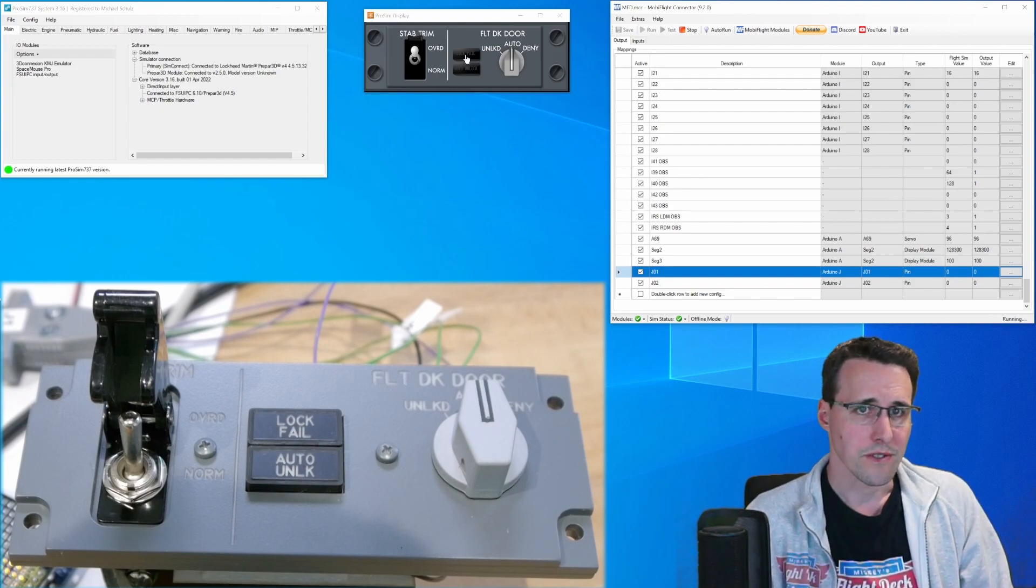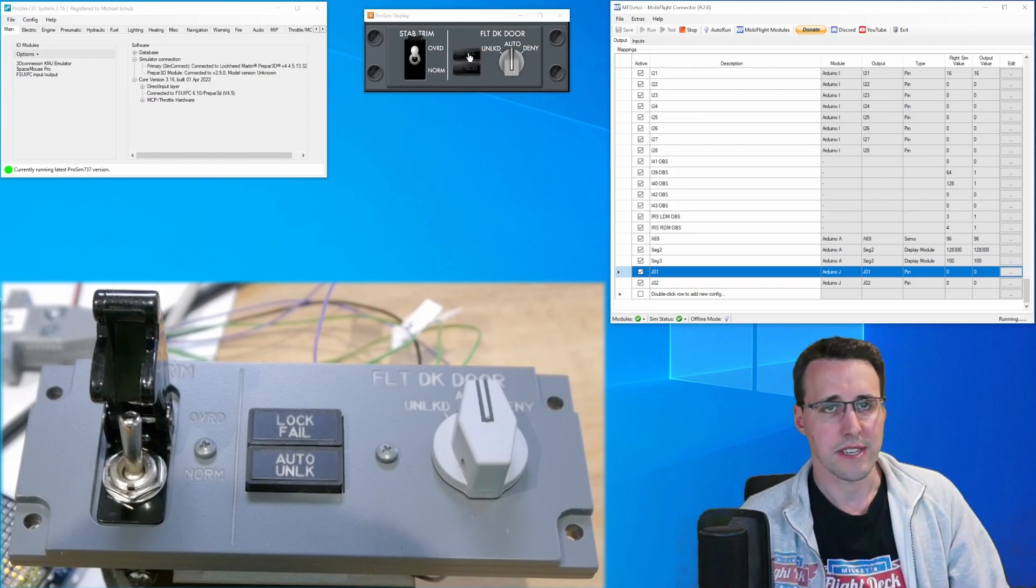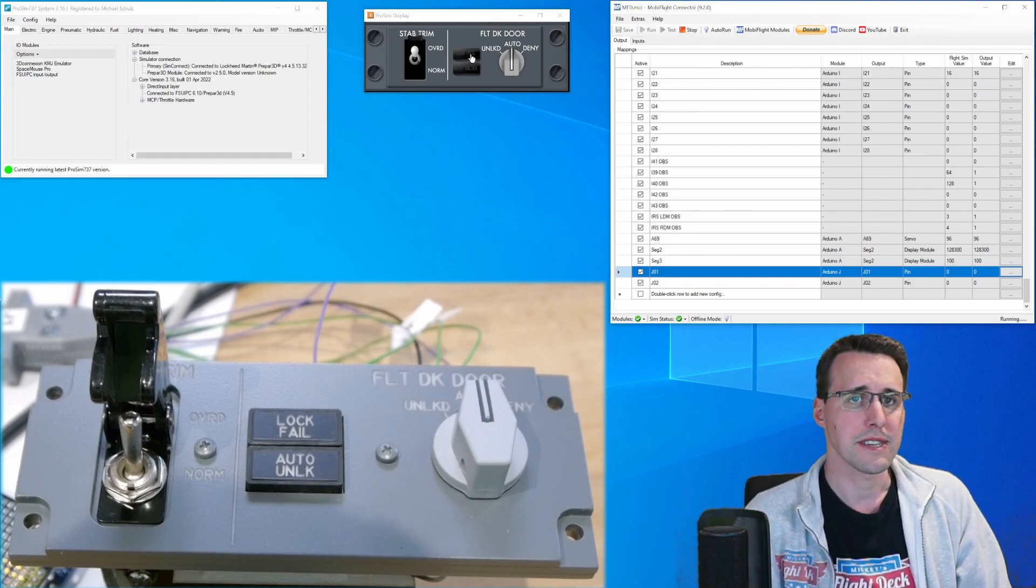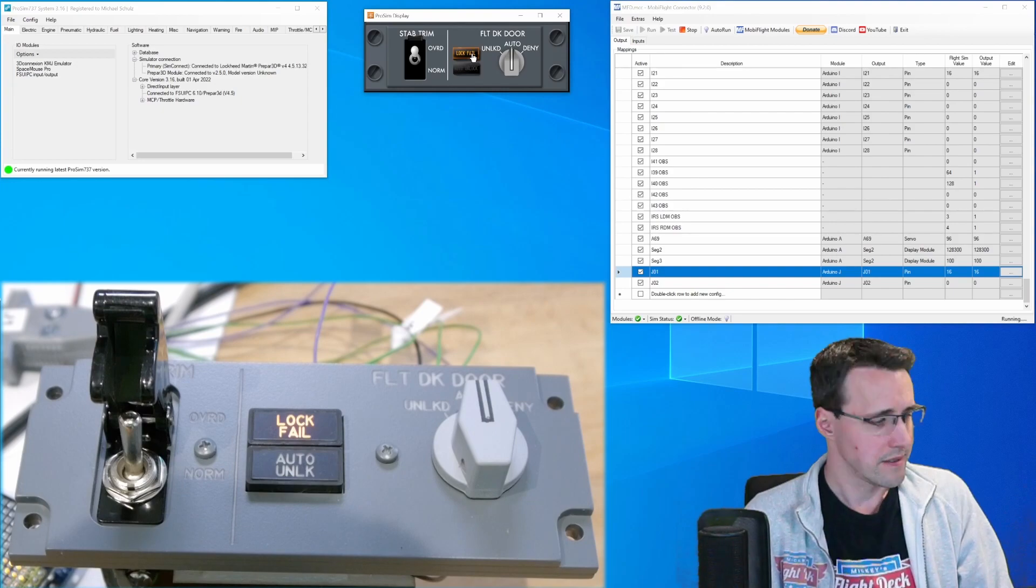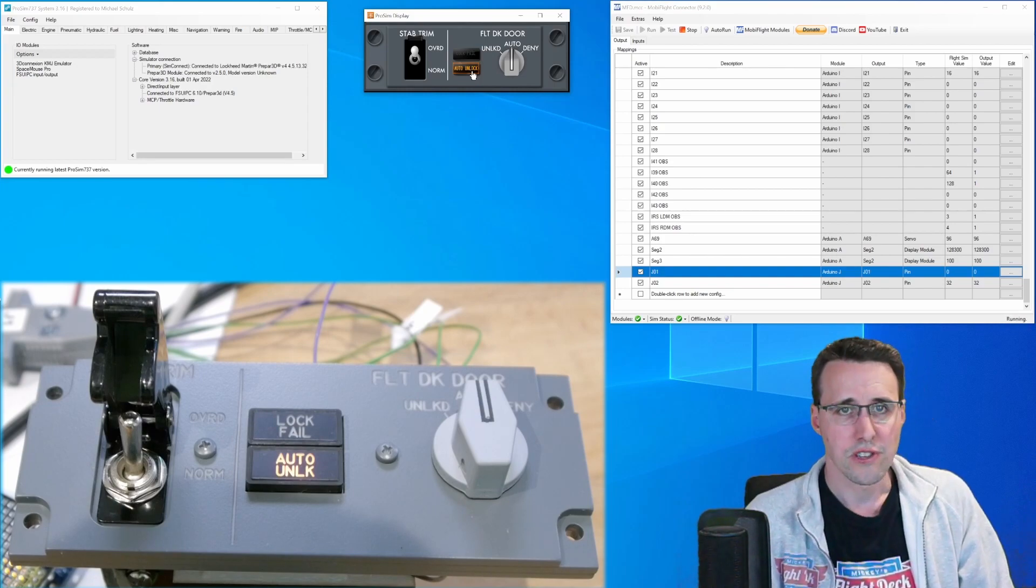And for this, we can click here onto the LEDs or the annunciators here in ProSim displays. The lock fail is lighting up and the auto unlock is lighting up too.